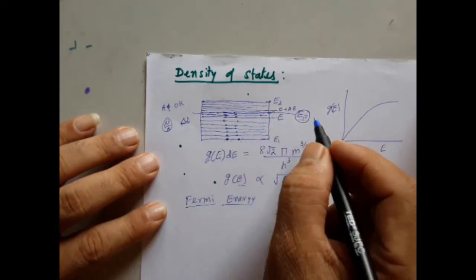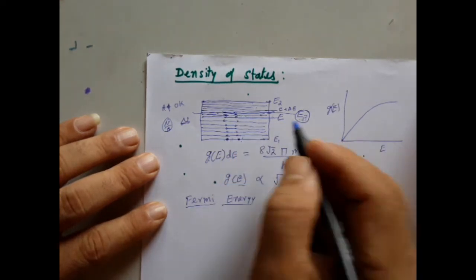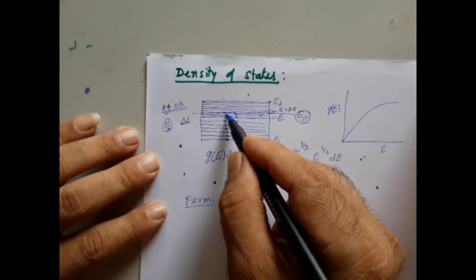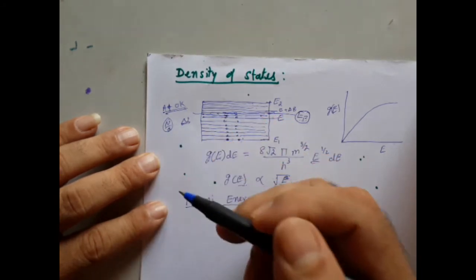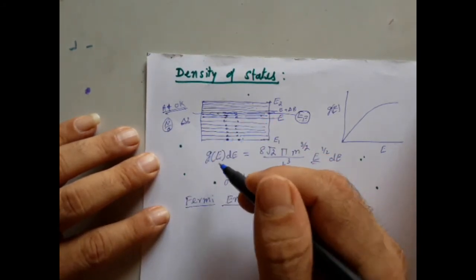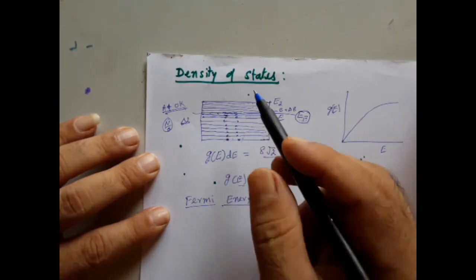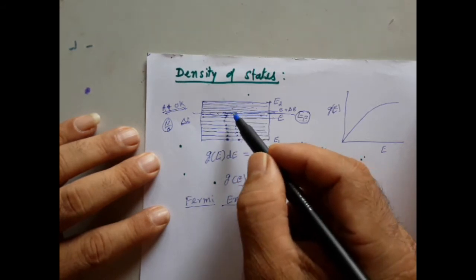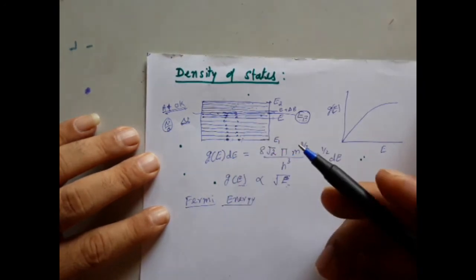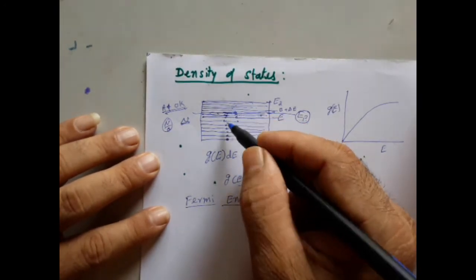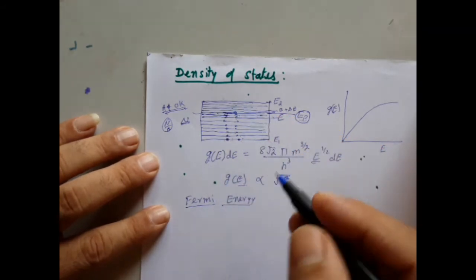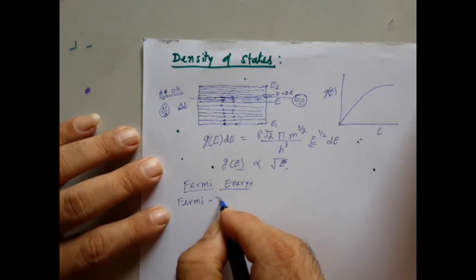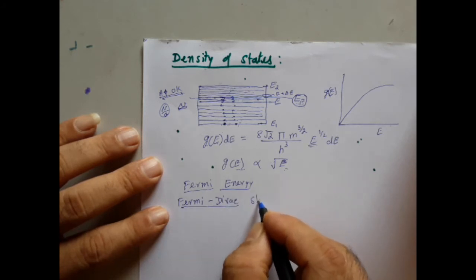Fermi energy is the highest occupied energy level of electrons at absolute zero Kelvin. Electrons are present only up to the Fermi energy; above that, all energy levels are empty at absolute zero Kelvin. When temperature increases, thermal energy causes electrons below the Fermi level to jump to higher energy levels. This distribution is explained by the statistical phenomenon developed by Fermi and Dirac together, called Fermi-Dirac statistics.